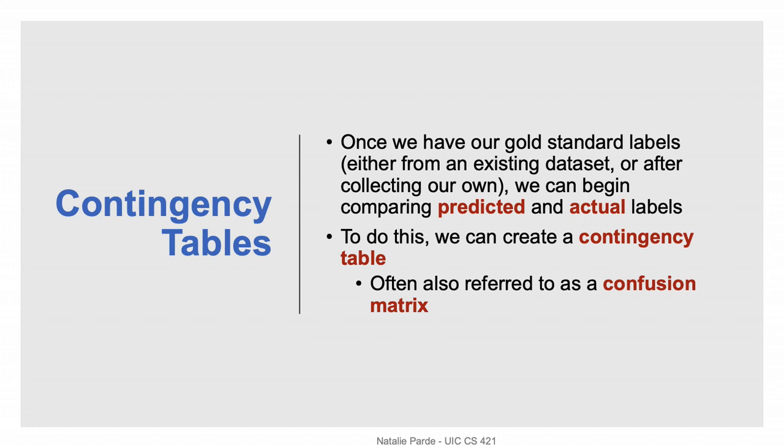Once we have our gold standard labels, we can actually begin to evaluate our classification model. Evaluating classification performance basically boils down to comparing predicted and actual or gold standard labels. We usually do this using metrics based on contingency tables, also referred to as confusion matrices.